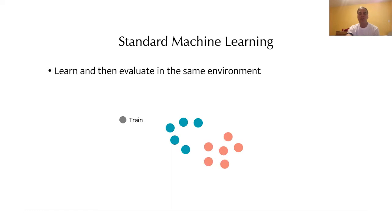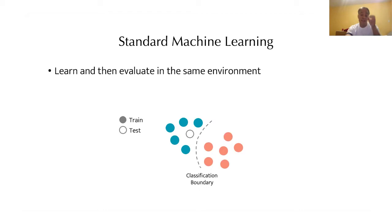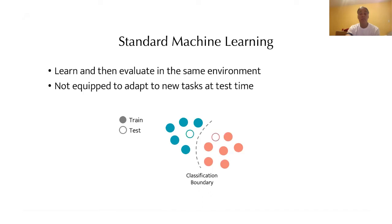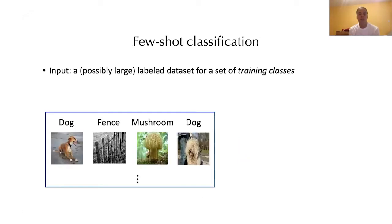The standard machine learning setup is that we learn and evaluate in the same environment. Each example is a little circle; we have two classes, the blues and the reds — that's our training set. Our system builds a classification boundary and we do very well when test examples are drawn from the same distribution. But what happens when we want to have a new task at test time? Let's say our examples were pedestrians and cars in a self-driving example — we do very well at classifying those. Now we have to adapt to a moose that we've never seen during training time. So towards that aim, we look at few-shot classification.